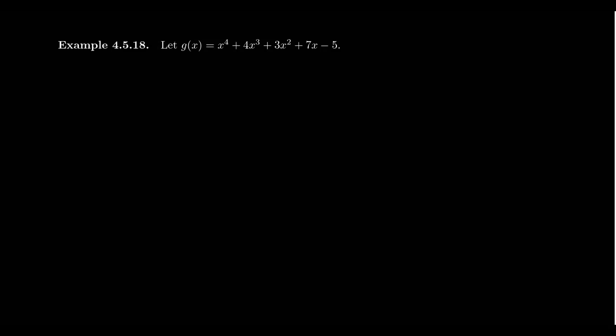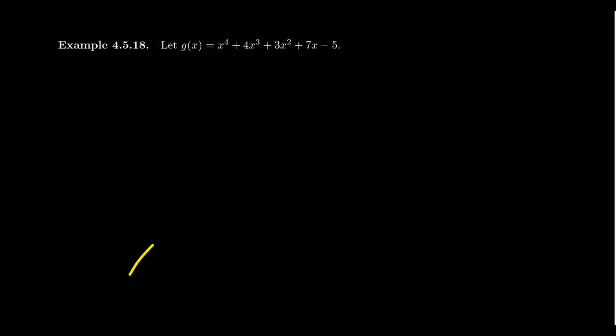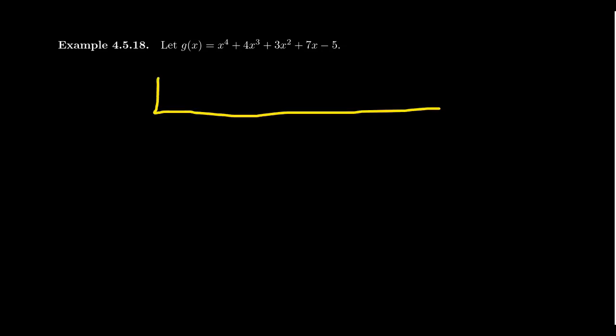Now there's an interesting thing when it comes to the lower bound theorem that you're going to want to look out for here. So if we take the polynomial g(x) equals x to the fourth plus 4x cubed plus 3x squared plus 7x minus 5. If we're trying to divide this one right here, notice the following. We write this down 1, 4, 3, 7, and negative 5.